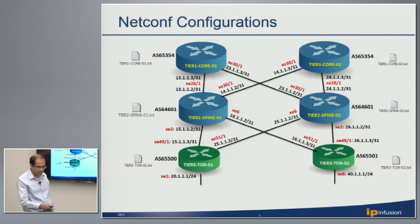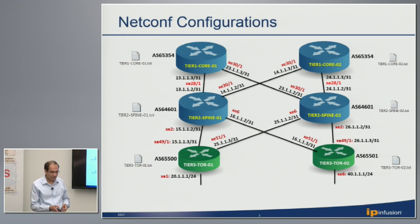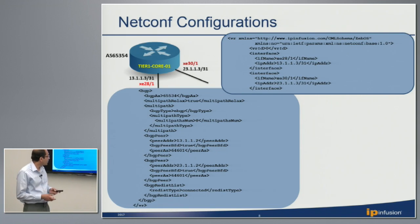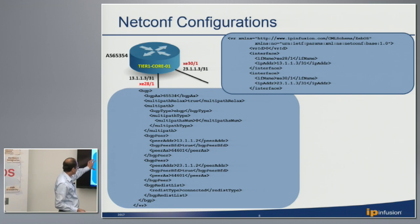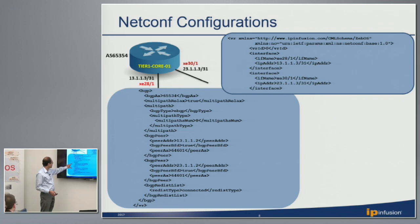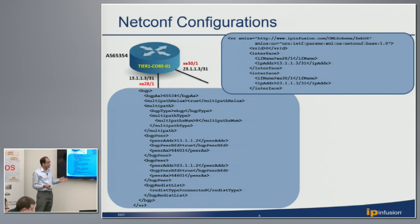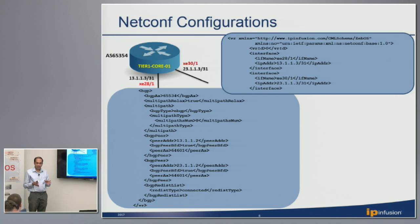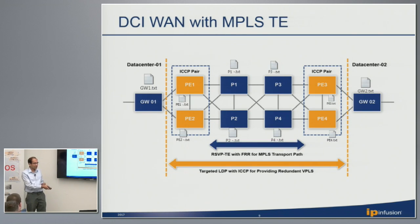Here are some configurations for the L3 data center solution based on netconf. Our netconf interface uses very standard netconf configuration of BGP peers and BGP attributes like multipath. We support Ansible, netconf, and REST. For this webinar demo, we have used primarily netconf and CLI for the L3 CLOS webinar. For lack of time, let me hand it over to Ajit.